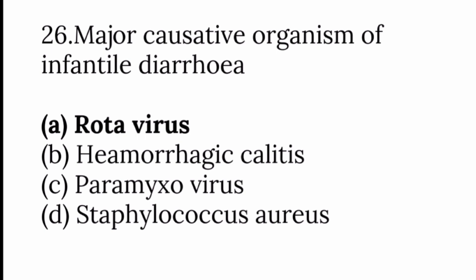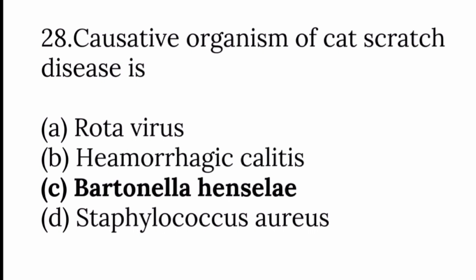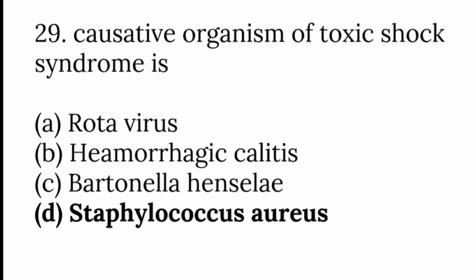The major causative organism of infantile diarrhea is rotavirus. The causative organism of hemorrhagic colitis is E. coli. The causative organism of cat scratch disease is Bartonella henselae — when this disease occurs, there are enlarged lymph nodes following a cat bite or scratch. The causative organism of toxic shock syndrome is Staphylococcus aureus.